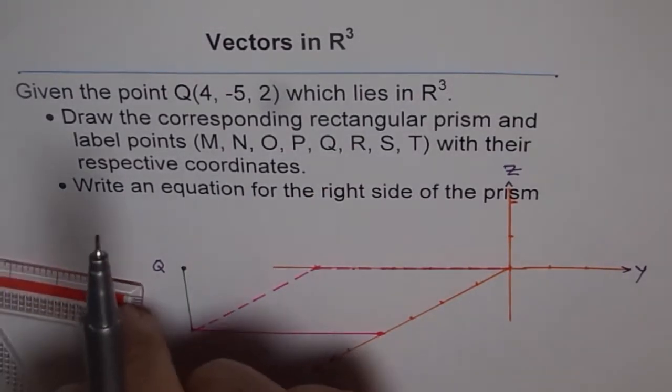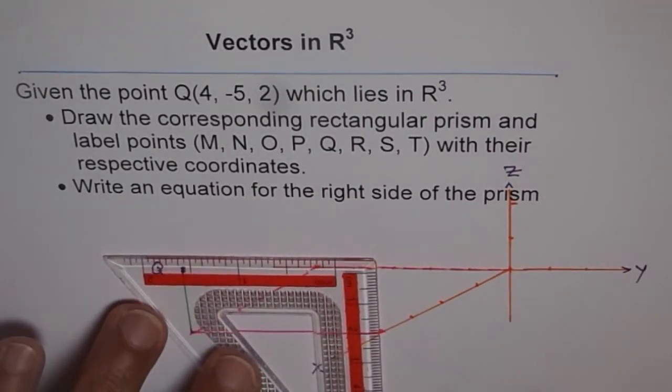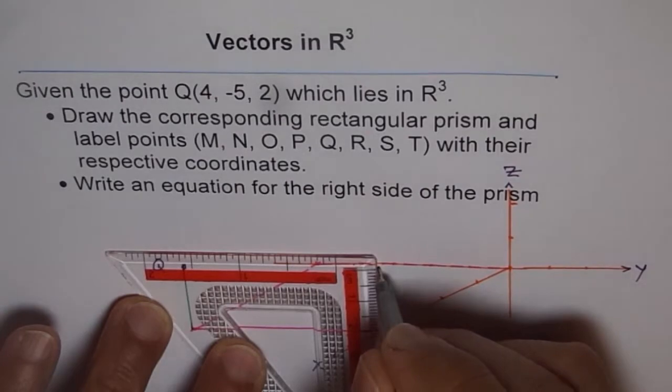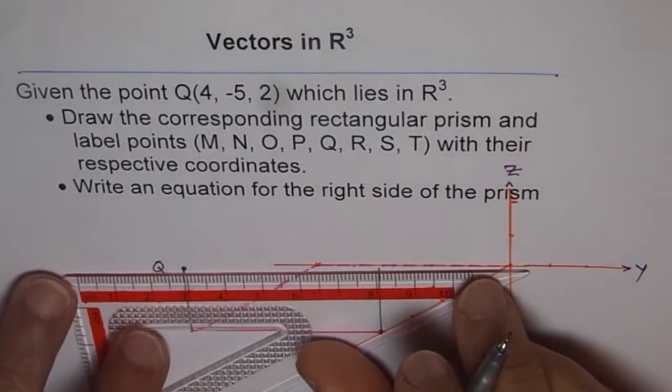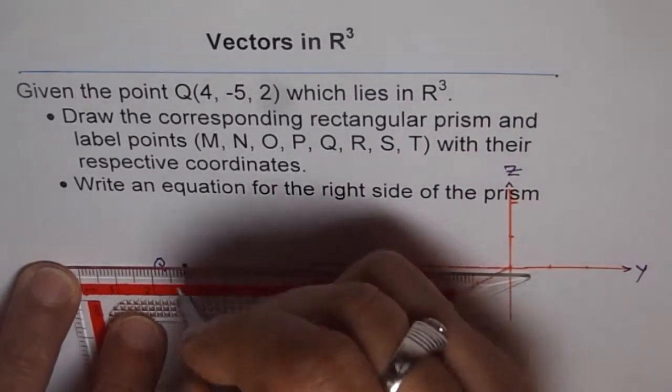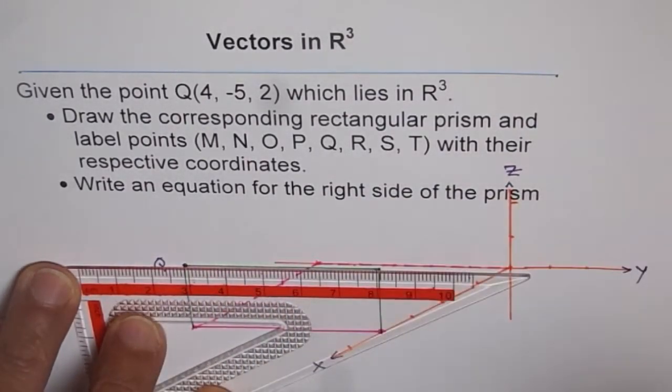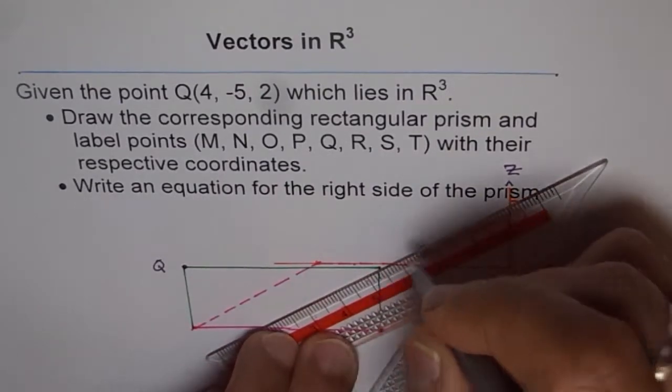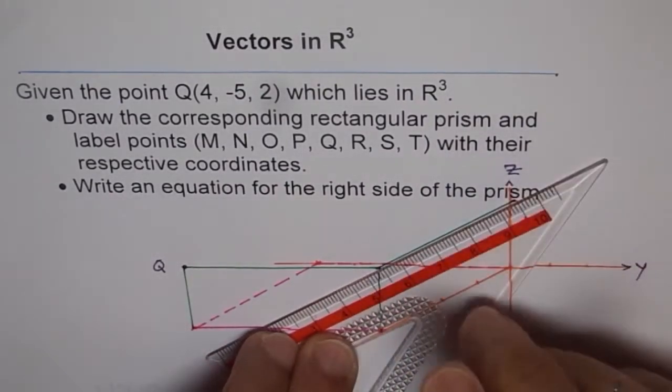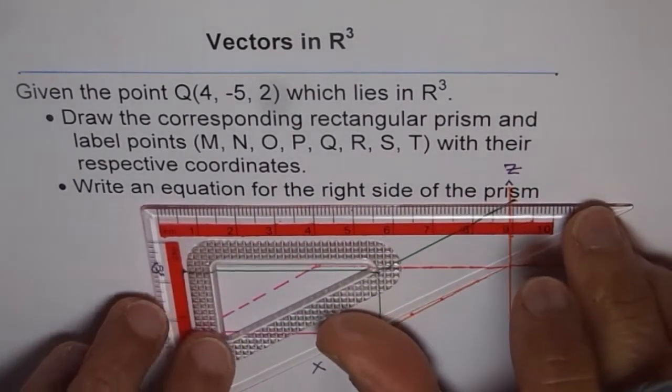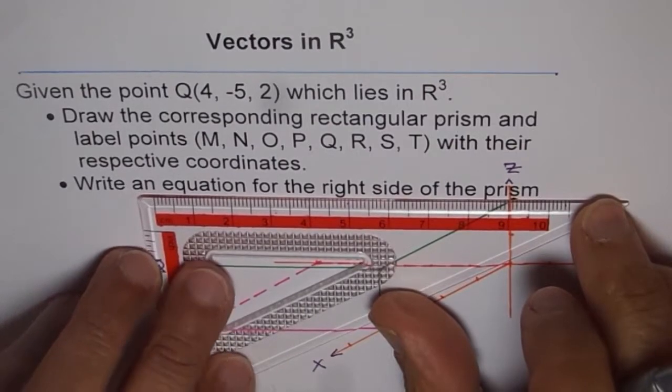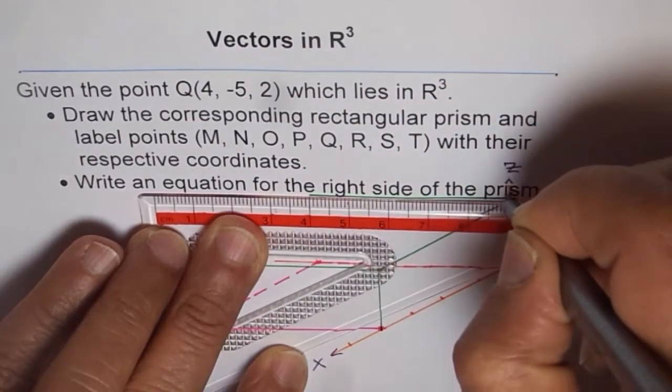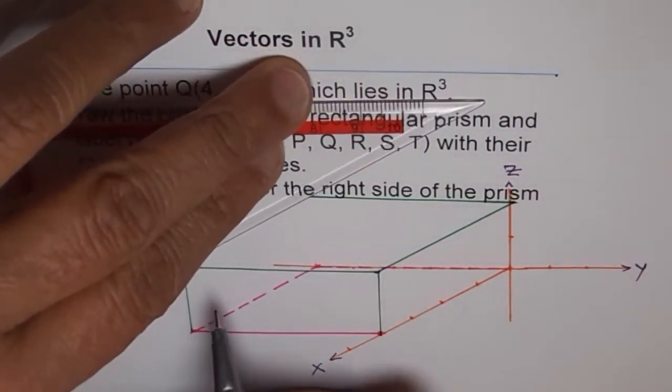Now we are here. So this point is 4 and 5, and z is still 0 for us. So now what we do is, we go two units up from here. Let me use different ink to go two units up from here. So that is here, two units. So this is two units. So this is point Q. So now we got the point Q for us. So we have point Q here, which is 4, minus 5, and 2. Now we can complete our prism.